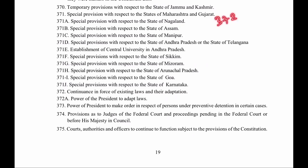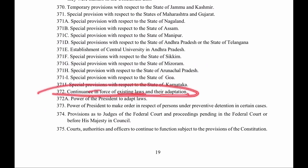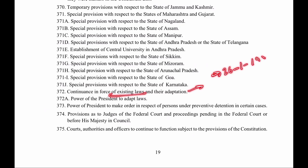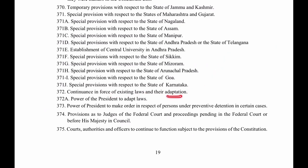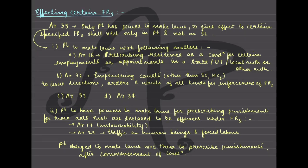Article 372, which was mentioned in Article 35, deals with the continuance in force of existing laws and their adaptation. Laws which were in existence before the commencement of the constitution shall continue in force until and unless Parliament decides to abrogate or end them.